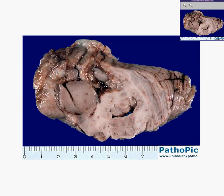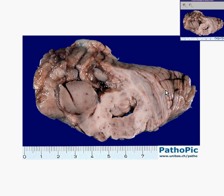Here is another brain tumor. We're getting pretty good at picking these out quickly because they look so much different from the normal brain. Notice this is a cerebellum because you have these small folia, which are linear, rather than the larger, more irregular gyri and sulci which you see in the cerebrum.